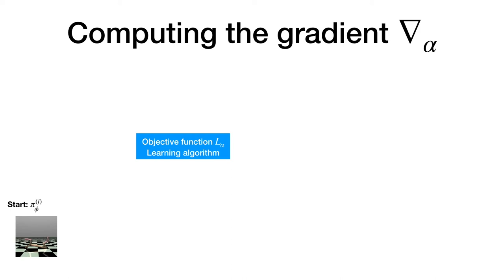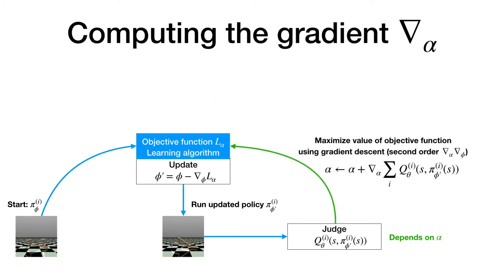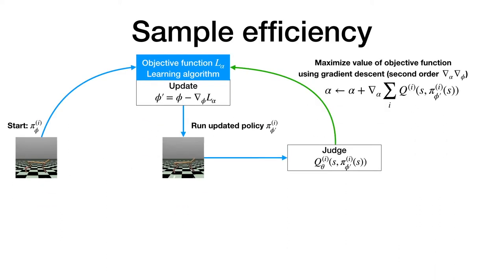Given the current agent parameters phi, we will first apply the current objective function to yield updated parameters phi prime. Next, we will evaluate the updated agent in different states and use a q function to estimate how well the updated policy is able to perform. Notice how, by unrolling a computational graph, the output of q is now a function of the parameters alpha of the objective function. This allows us to calculate a second-order gradient in the direction that we expect the objective function to improve most. We then repeat this procedure for each agent in the population and average the gradients to improve the objective function.